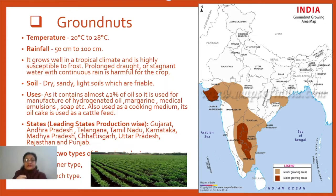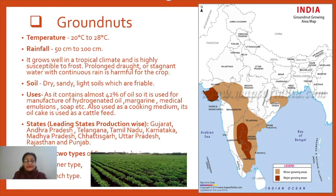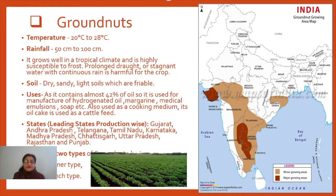Regarding soil, groundnut always needs a dry, sandy, or light soil so that water from rainfall seeps down easily and does not remain on the surface, because the groundnut seeds ripen within the soil itself. A dry, sandy soil with coarser particles is better for growing groundnuts. That is why maximum production is concentrated towards Gujarat and the different parts of peninsular India, as seen on the map.